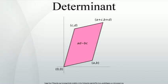The determinant of a matrix product of square matrices equals the product of their determinants, thus the determinant is a multiplicative map. This property is a consequence of the characterization of the determinant as the unique n-linear alternating function of the columns with value 1 on the identity matrix. The formula can be generalized to products of rectangular matrices, giving the Cauchy-Binet formula, which also provides an independent proof of the multiplicative property.